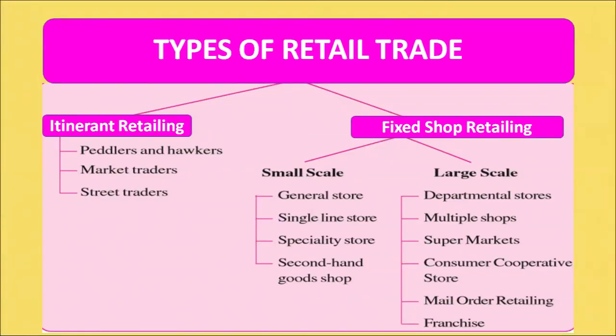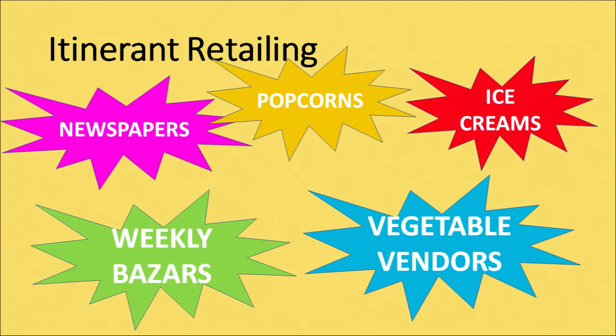Next, we have the types of retail trade, which can broadly be of two types: itinerant retailing or fixed shop retailing. By itinerant retailing, we mean a facility where no fixed shops are maintained and commodities are sold by peddlers or hawkers. Products sold through itinerant retailing include newspapers, popcorns, ice creams, vegetable vendors, and even weekly bazaars.